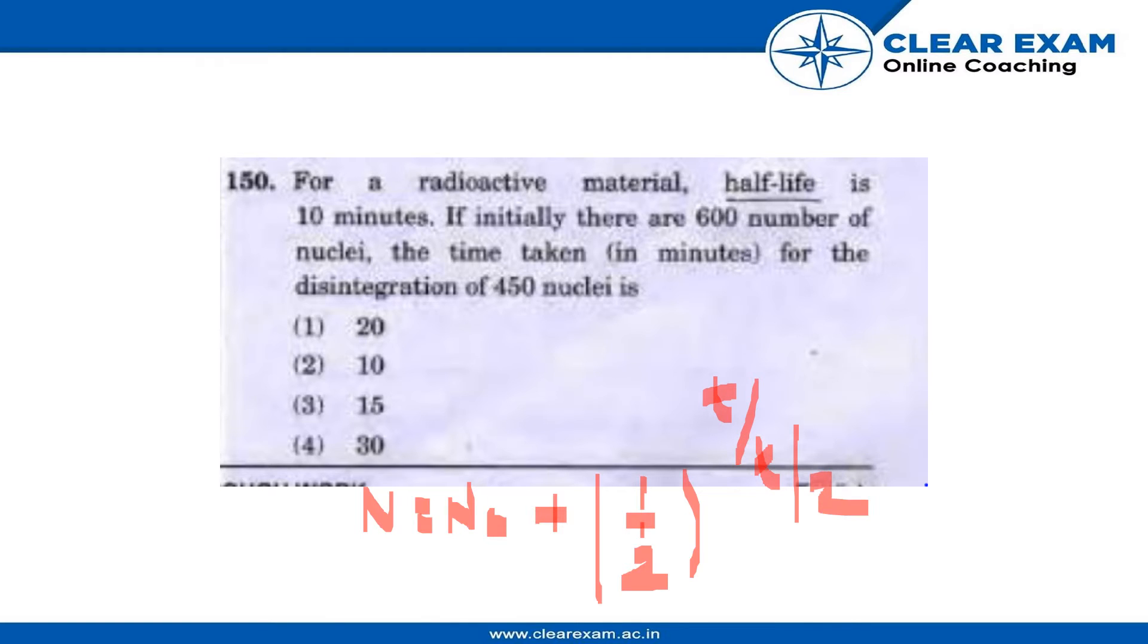As it is given that there are 600 nuclei initially, this is N₀. So we know that the number of nuclei present initially, N₀, is 600. And t½, the half-life, is 10 minutes.